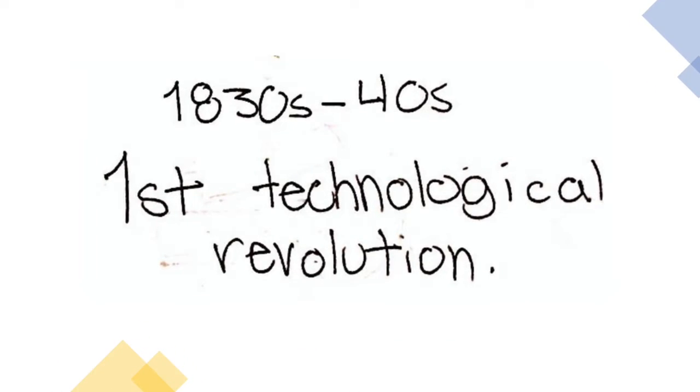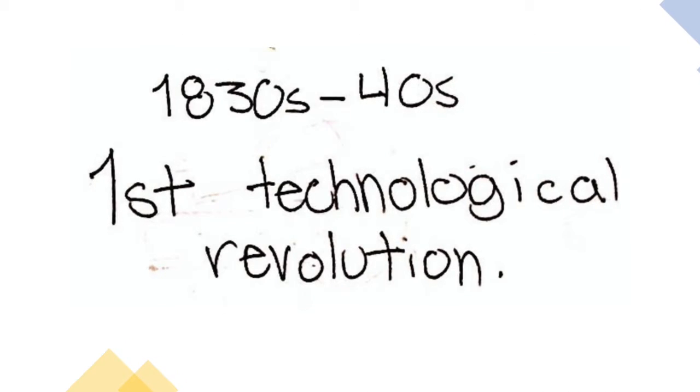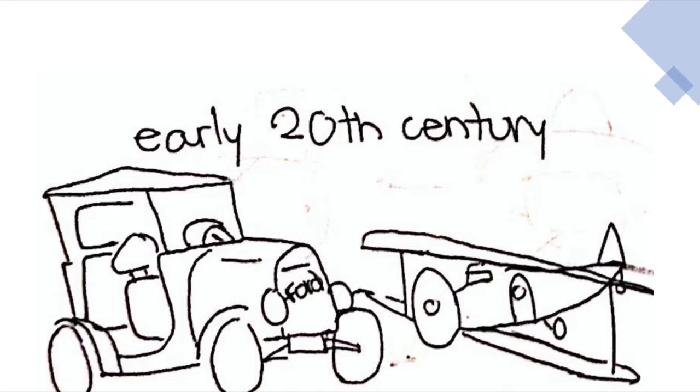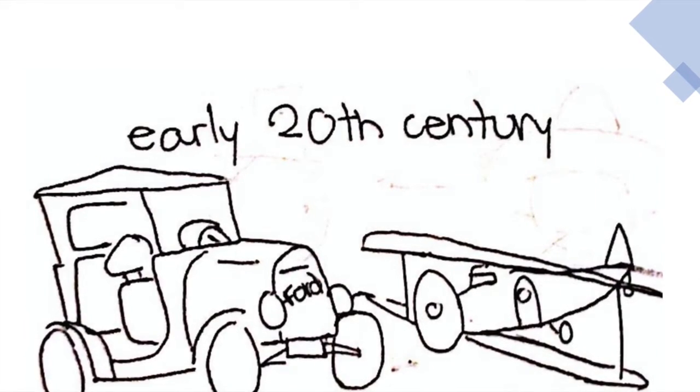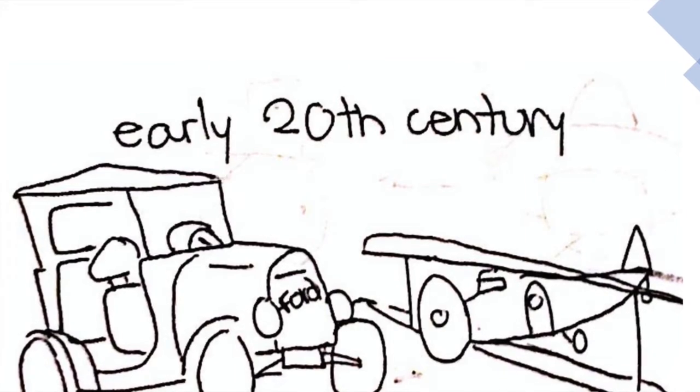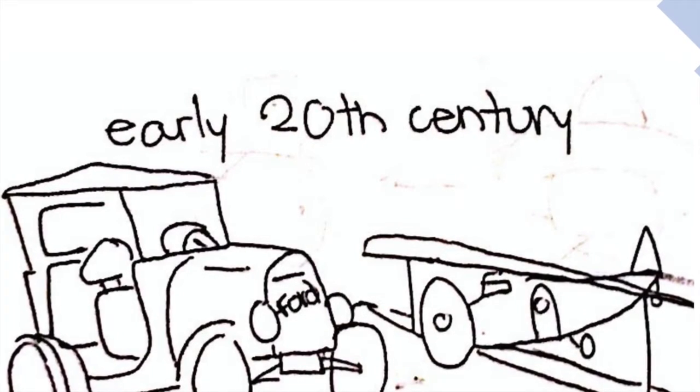Modern historians often call this era the first technological revolution to set it aside from a second period of industrialization that happened from the late 19th century to early 20th century and saw rapid advances within the steel, electric, and automobile industries.